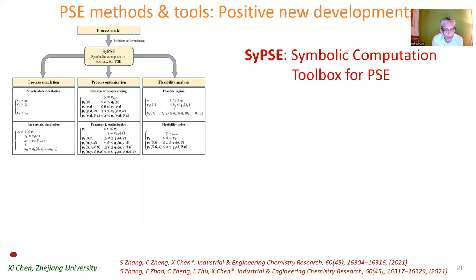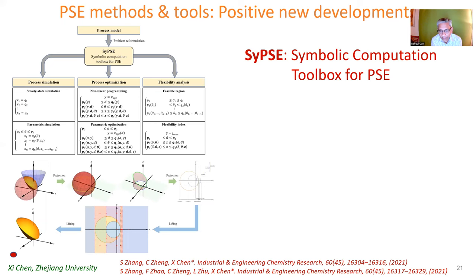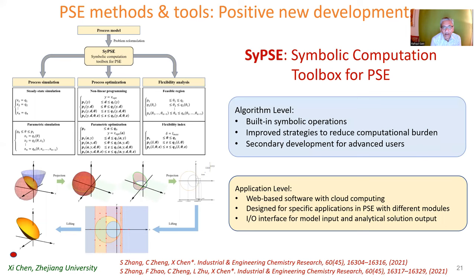A contribution from Zhejiang University by Xichen and his group: they developed a symbolic computational toolbox capable of process simulation, process optimization, and flexibility analysis using symbolic computational methods. Their software and algorithm has built-in symbolic operations, provides improved strategies to reduce computational burden, and is web-based with cloud computing options. References give more details on the tool and background theory.